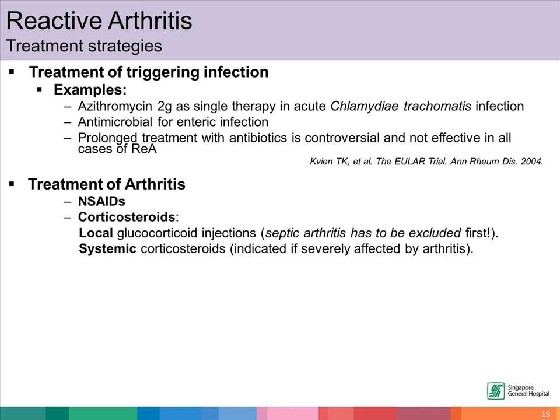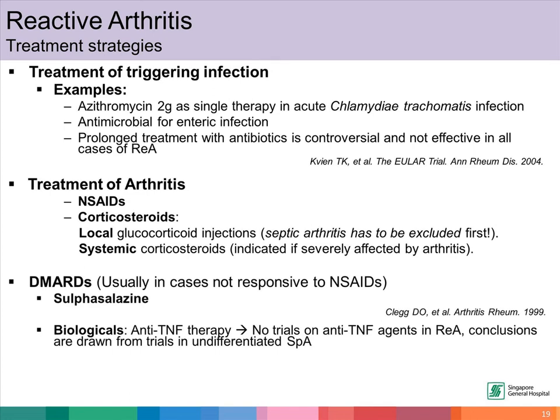Systemic steroids like oral prednisolone can also be given if the patient is severely affected by the arthritis. Disease-modifying anti-rheumatic drugs can also be considered, usually in cases that are not responsive to NSAIDs. Sulphasalazine has been shown in studies to be able to induce clinical remission in reactive arthritis. Other therapies that can be considered include biologicals such as anti-tumor necrosis factor agents. There are no trials on anti-TNF agents in reactive arthritis; conclusions are drawn from trials in undifferentiated spondyloarthritis. Non-pharmacological treatment includes physiotherapy, which is important as it can reduce pain and prevent disability.